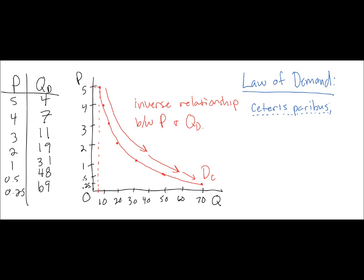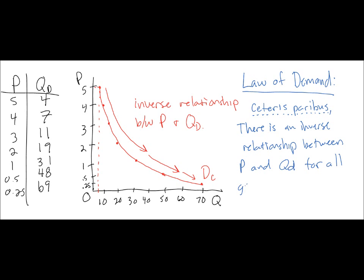So the law of demand actually starts with the words ceteris paribus. In other words, all else equal, there is an inverse relationship between price and quantity demanded for all goods, services, and — since we talk about both product and resource markets in economics — we must also include productive resources.